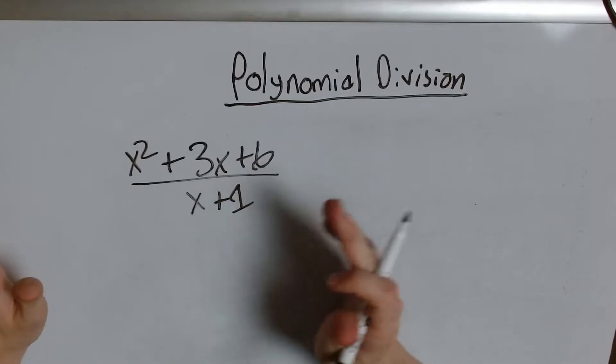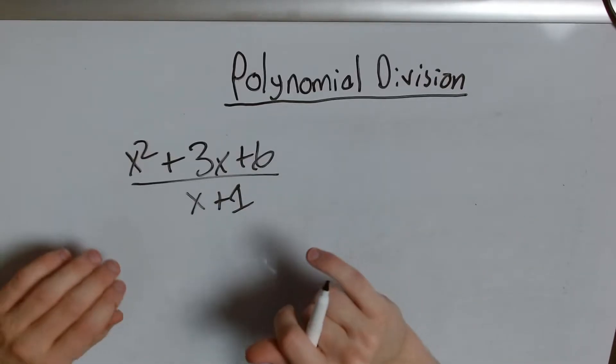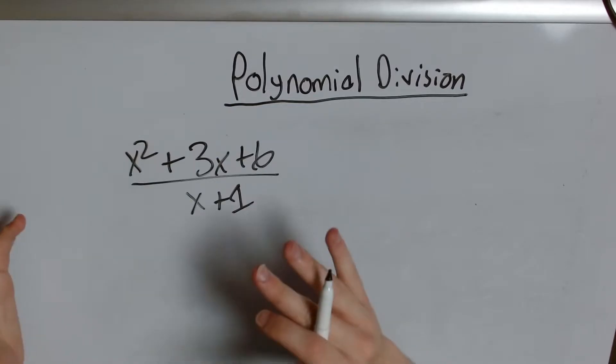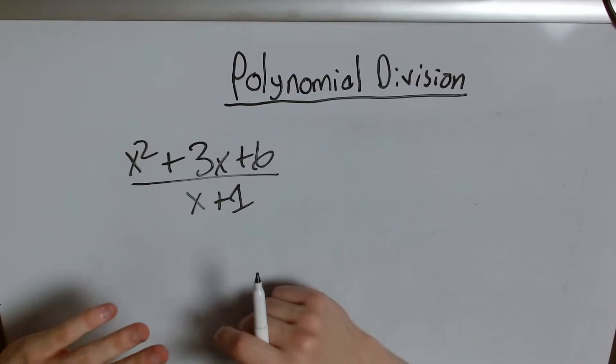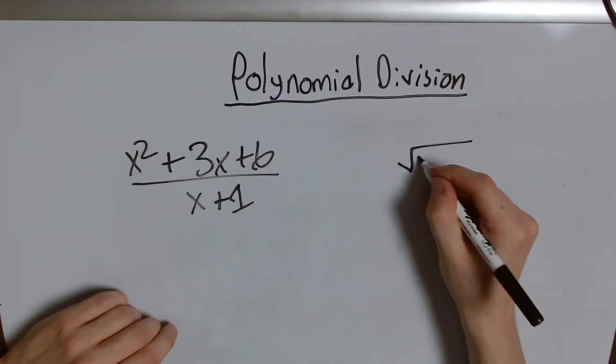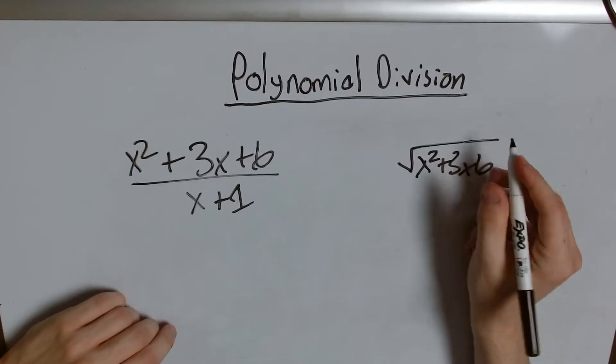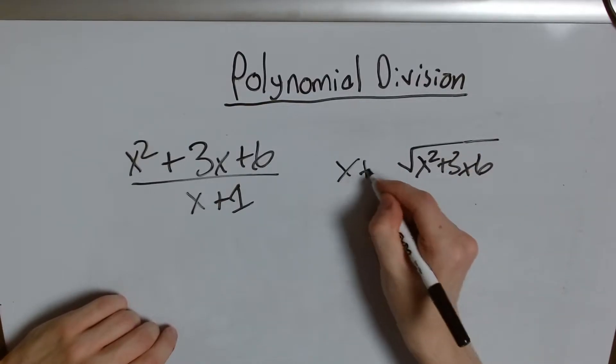This time with polynomials. The steps in the setup are the exact same as regular old integer long division you learn in elementary and middle school. So I have my thing I'm dividing inside and then I have outside what I'm dividing it by.